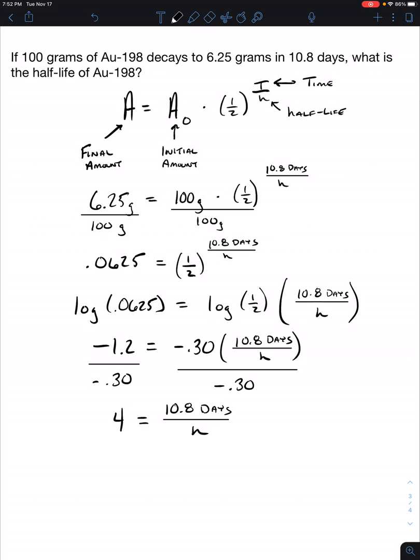And so all we have to do now is multiply by H to both sides. So now you have 4H equals 10.8 days. Divide both sides by 4 to isolate H. And H is going to be equal to 10.8 divided by 4, which is 2.7 days. And that would be our half-life.